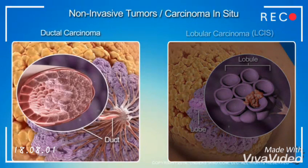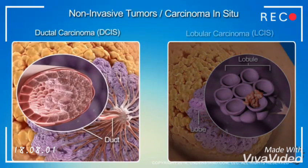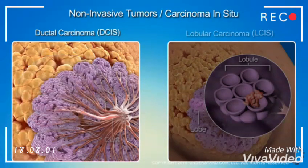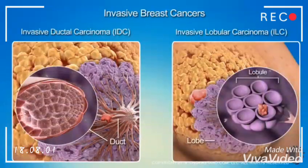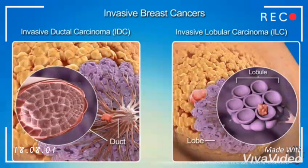Ductal carcinoma in situ, or DCIS, carries a much higher risk, and if untreated could become an invasive form of cancer. Invasive breast cancer spreads from its origin into other breast tissues and possibly to other parts of the body.